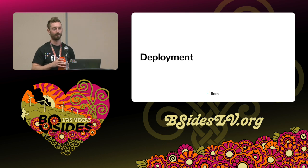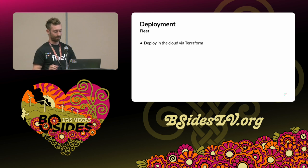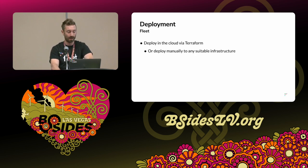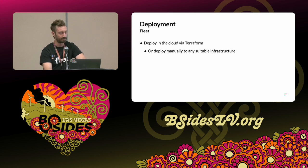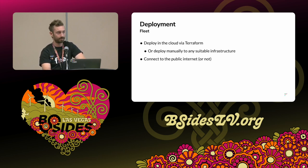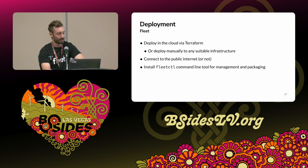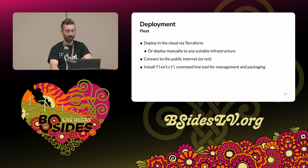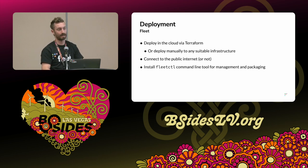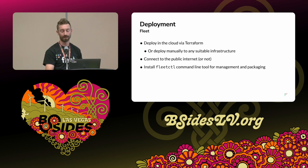Now we'll talk a bit about what deploying this whole system looks like. For Fleet, typically you deploy in the cloud via Terraform — it's really common to use AWS for this, but it's also really supported anywhere. You can also deploy it manually to any suitable infrastructure. You can connect it to the public internet or not, depending on what the needs are of your organization. You'd also want to install the Fleet control command line tool for management and building packages for installing OS Query, and that fleet control command line tool is what's being used in the demo when the queries and configuration are applied to Fleet in CI.